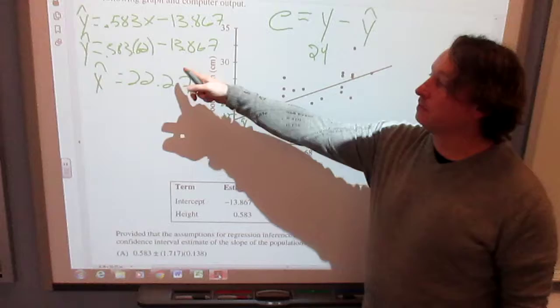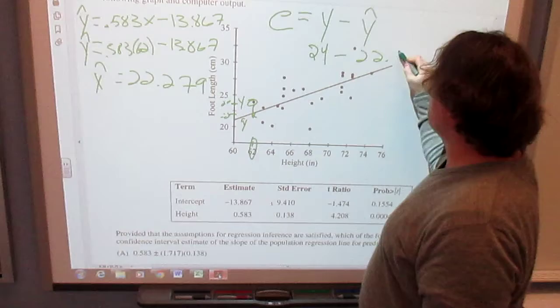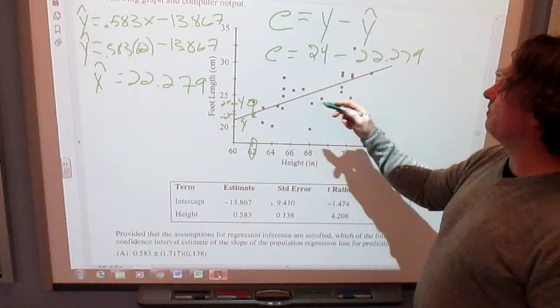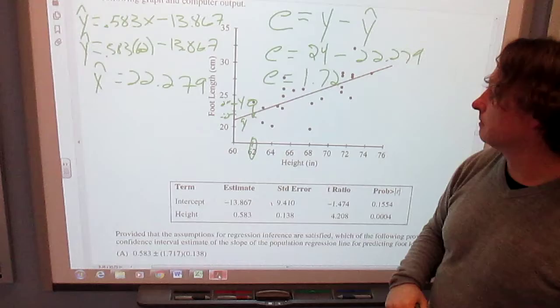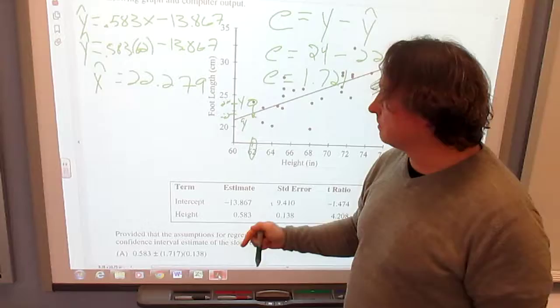Alright, so we have the Y from the graph. We calculated the predicted value from the formula, 22.279. So my residual would then be... What did we get for the residual? 1.721.